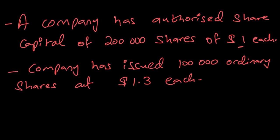That $1 represents the par value of the share — whenever the share was issued it had a par value written on it. That's the original value of the share. Now the company has issued 100,000 shares, offering them in the market, and people have purchased these shares at $1.30 each.